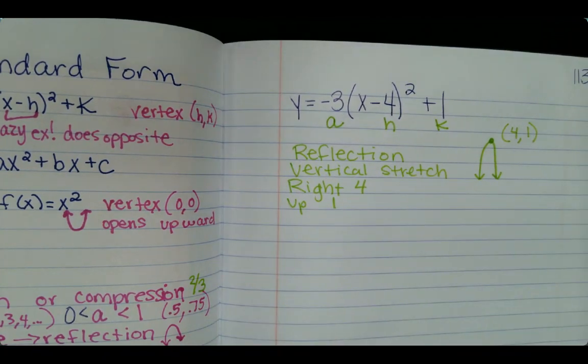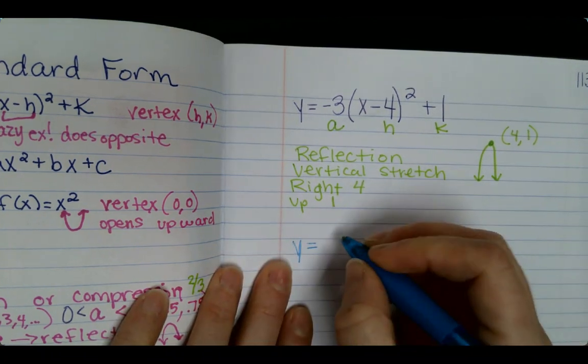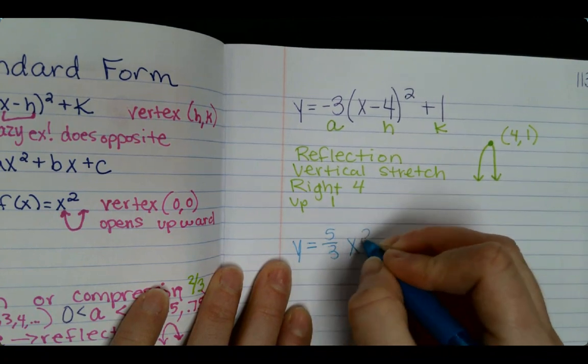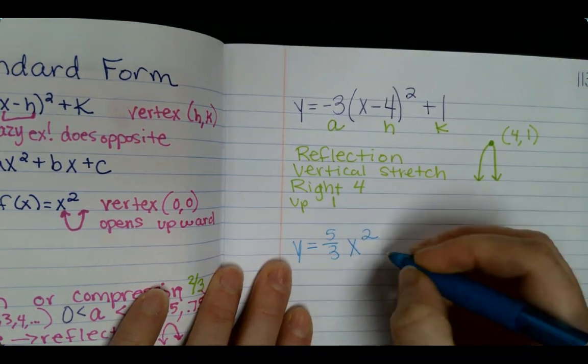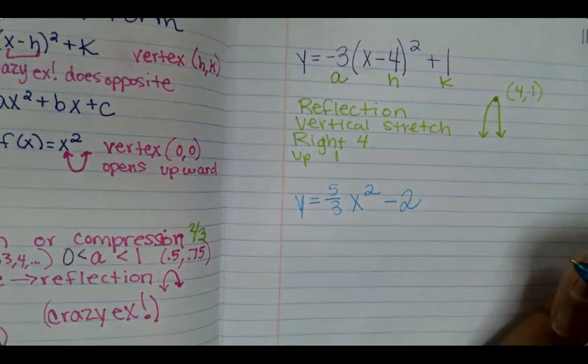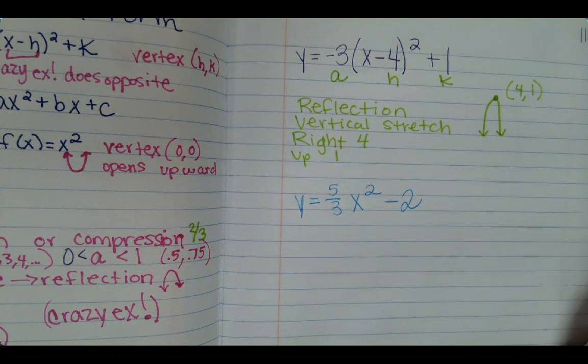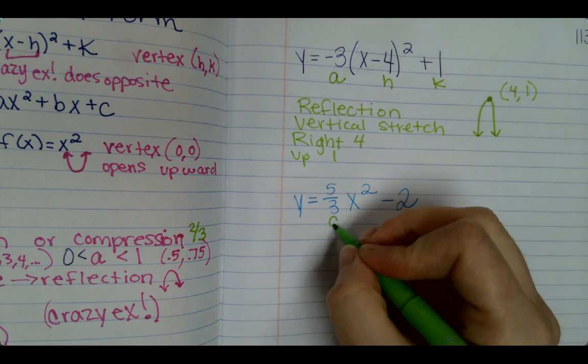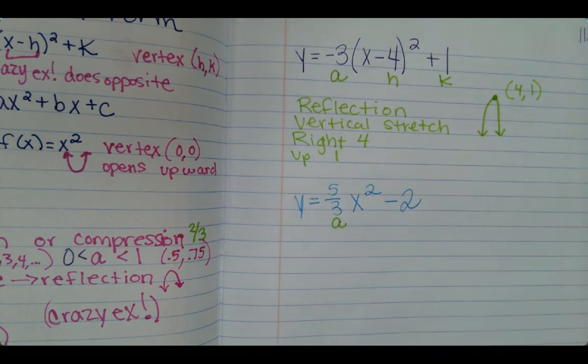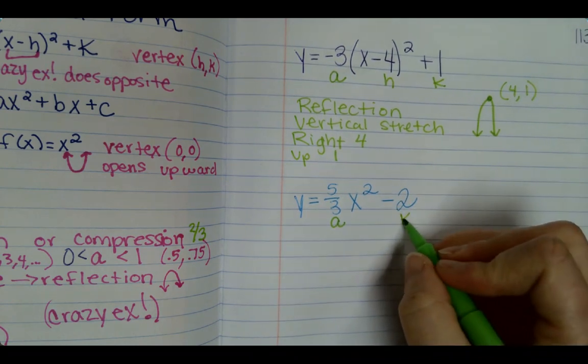Y equals 5 over 3 x squared minus 2. Okay, we know a is right here. We don't have an h because there's not anything inside the parentheses, but we do have a k. So it doesn't go left or right.